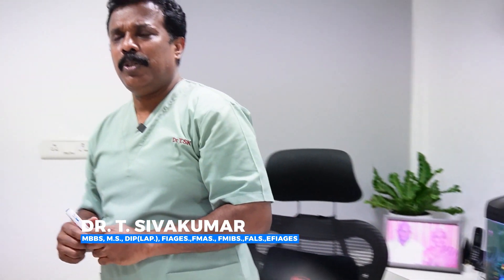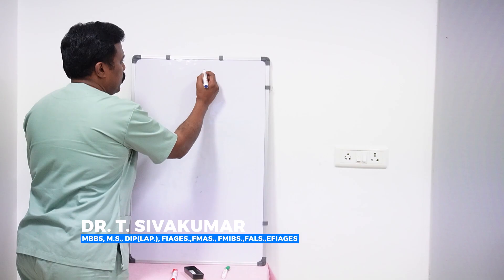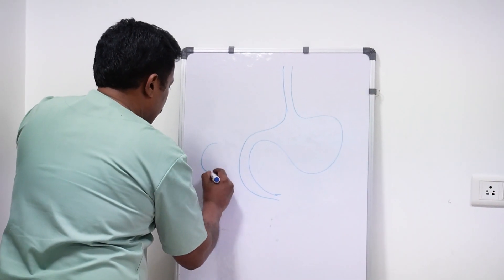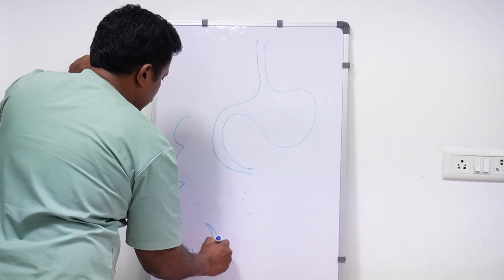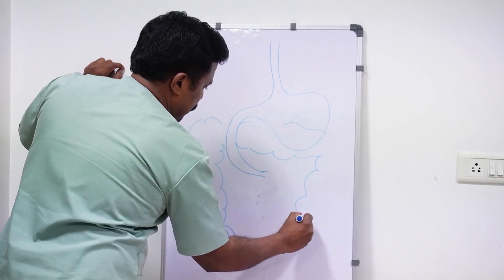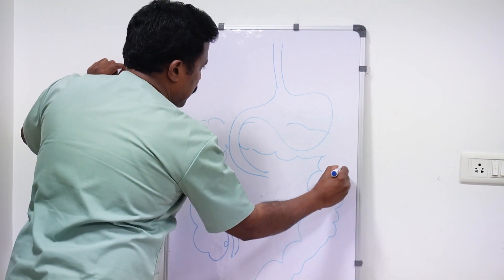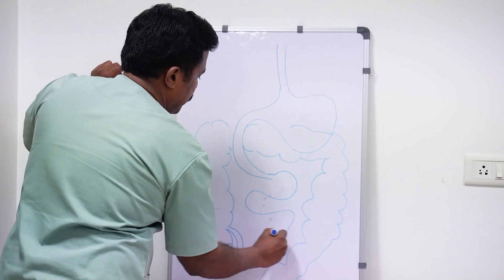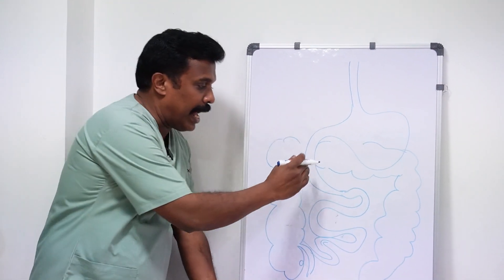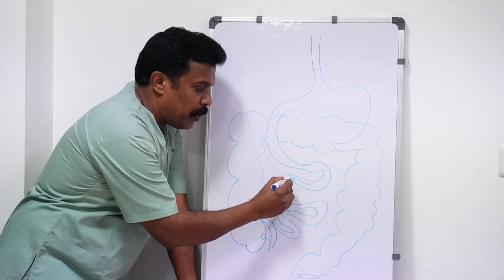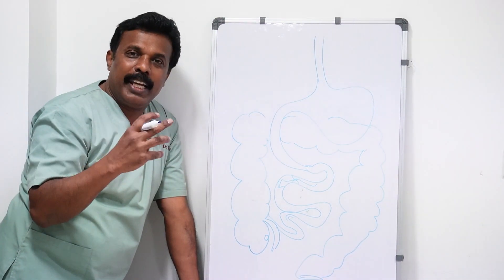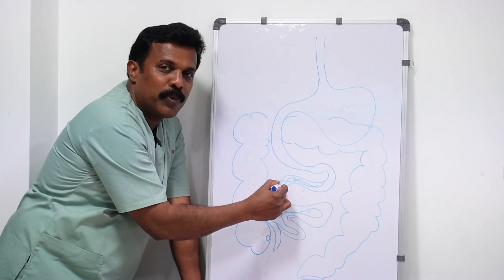Looking at intestinal obstruction — this is the stomach, this is the large intestine, and this is the small intestine. If there is an obstruction in some part, it is a hollow viscus, and food cannot pass from one end to the other. That causes the obstruction, so the pain will be cramping, colicky abdominal pain.